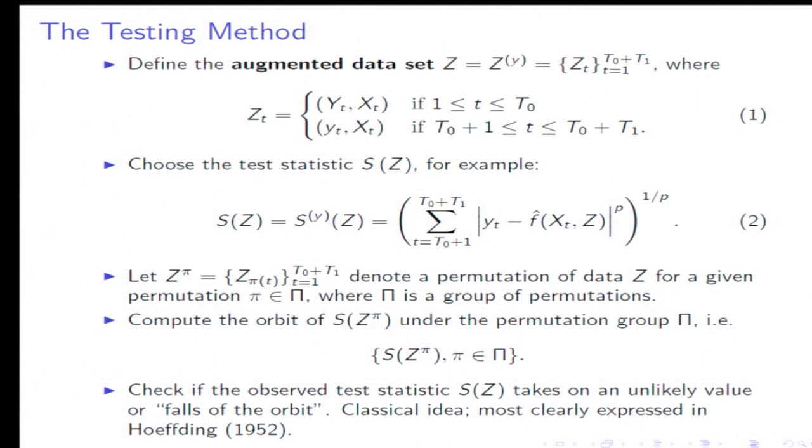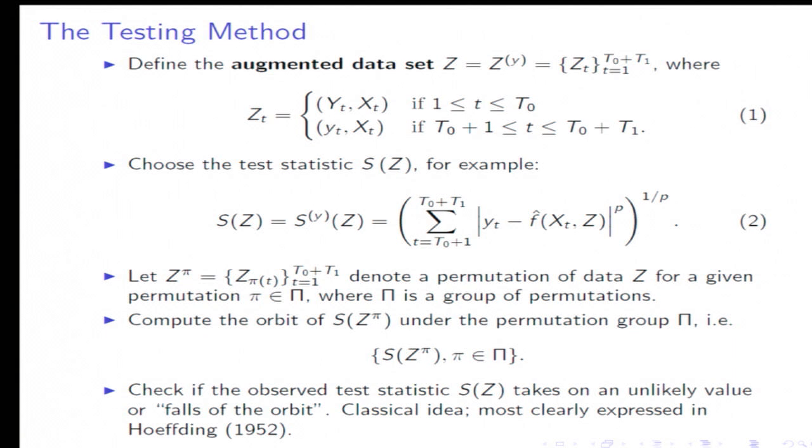What we're going to do is compute the orbit of the statistic under this permutation group. We're going to map out all the permutation values, and then we're going to check if the observed test statistic takes on an unlikely value or, in other words, whether it falls off the orbit. You can visualize this via histogram. You're going to map out the permutation values and see if your test statistic takes on an unlikely value like it does here or not.